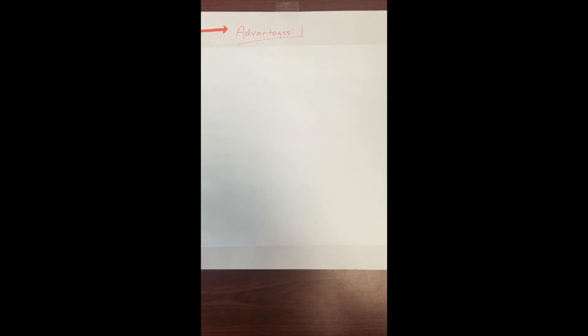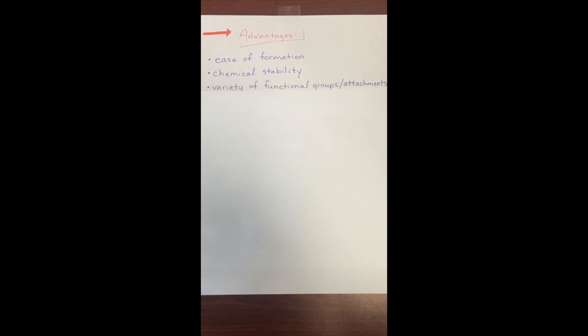So why in the world would we want to use a SAM? First, SAMs have the advantage of ease of formation. Since they are covalently bonded to the surface, SAMs have great chemical stability. For example, they can withstand shear stress from blood flow. Finally, SAMs can have a variety of functional groups and attachments, which allow great diversity for these modifications.